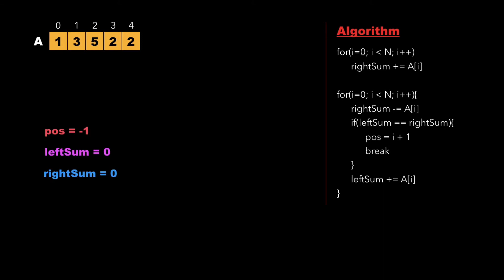Initially we run a for loop traversing the array from i equals 0 to n to calculate the total right sum. Starting at i equals 0, we accumulate each element, continuing for all elements of the array, and we get the final value of right sum as 13.